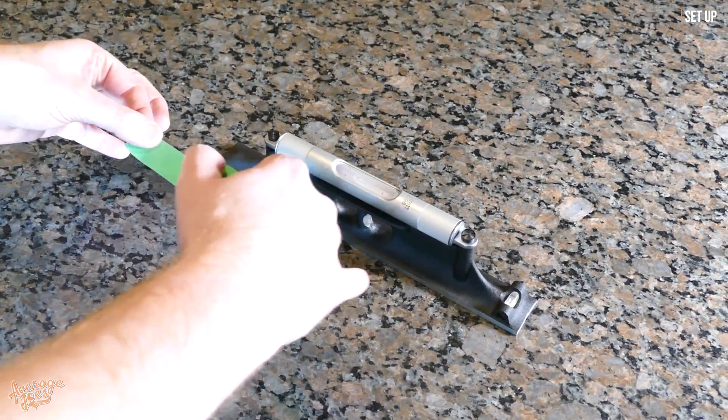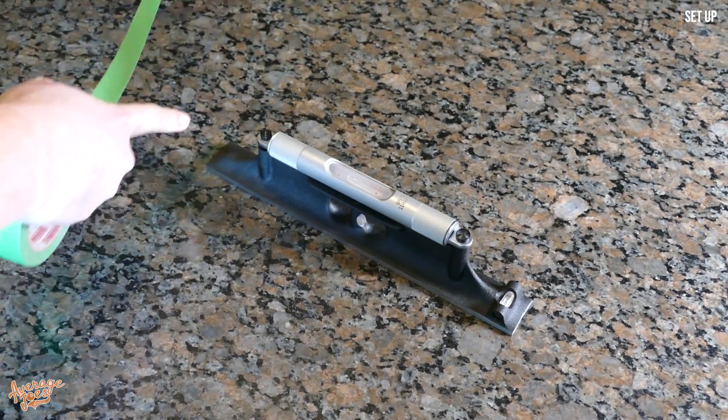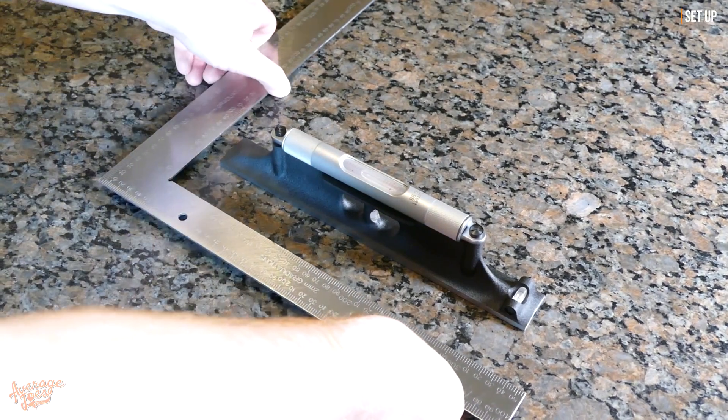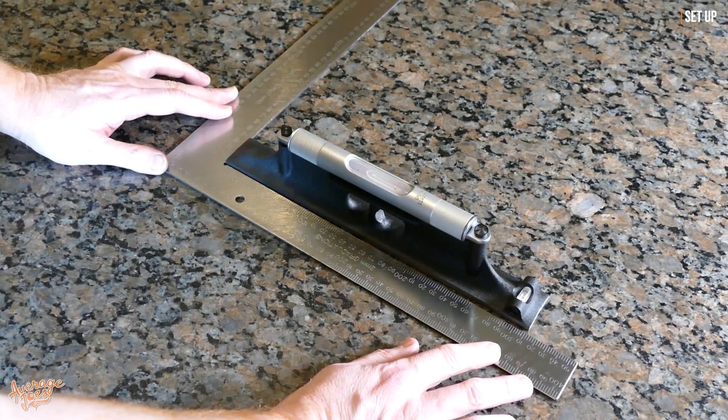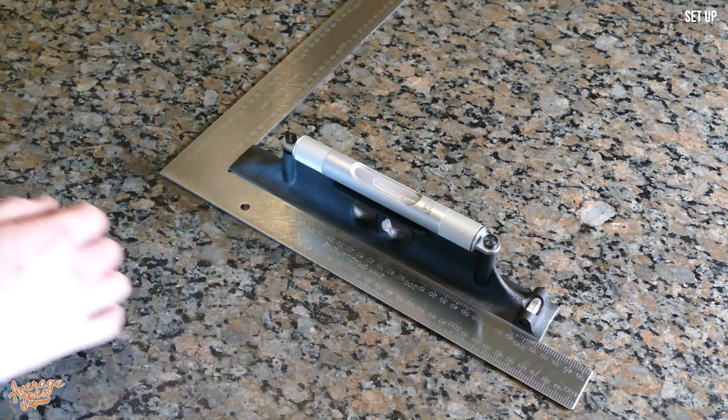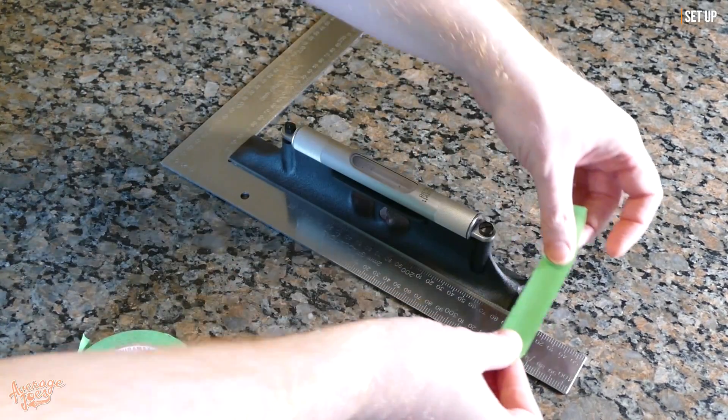So it's a good idea to take some decorator's tape, run that across the bottom, mark that off, and then again at the side so you've got a nice square to level it up to. Or alternatively, even better, I have a framing square here so I'll level that up with the base of the level. Now I'll tape that in place to make sure that can't move.